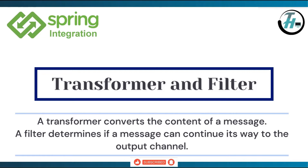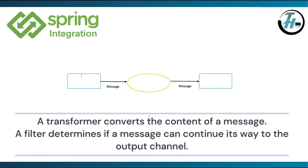A filter determines if a message can continue its way to the output channel — that is, it filters out the messages going on. Both have a simple flow. There is an input channel that passes the input message to the component. The component generates the output message by transforming or filtering, and sends it to the output channel.